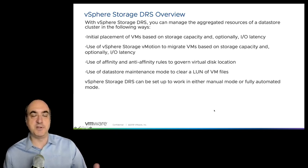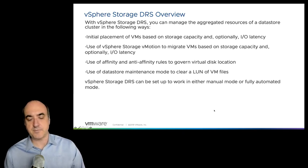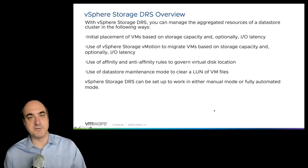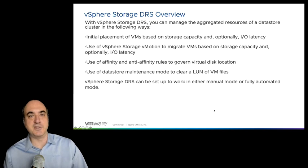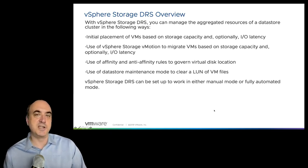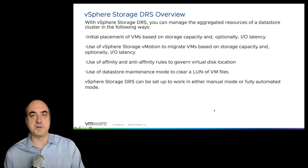You can create anti-affinity rules across VMs — for example, ensuring two VMs are never on the same data store. Just like host DRS, these placement rules always take precedence, so be careful when creating them. Storage DRS needs sufficient flexibility to migrate files; whatever resources remain after satisfying rules is where it can automate storage migration.